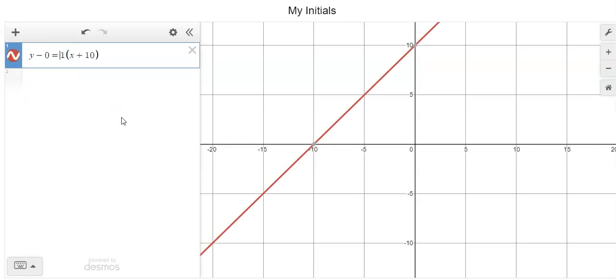If you need your letter to go the opposite direction, you can change this to a slope of negative one. Now it's going downhill, but I need to make my K so that it's a little bit steeper because I want it to look like the side of the K.